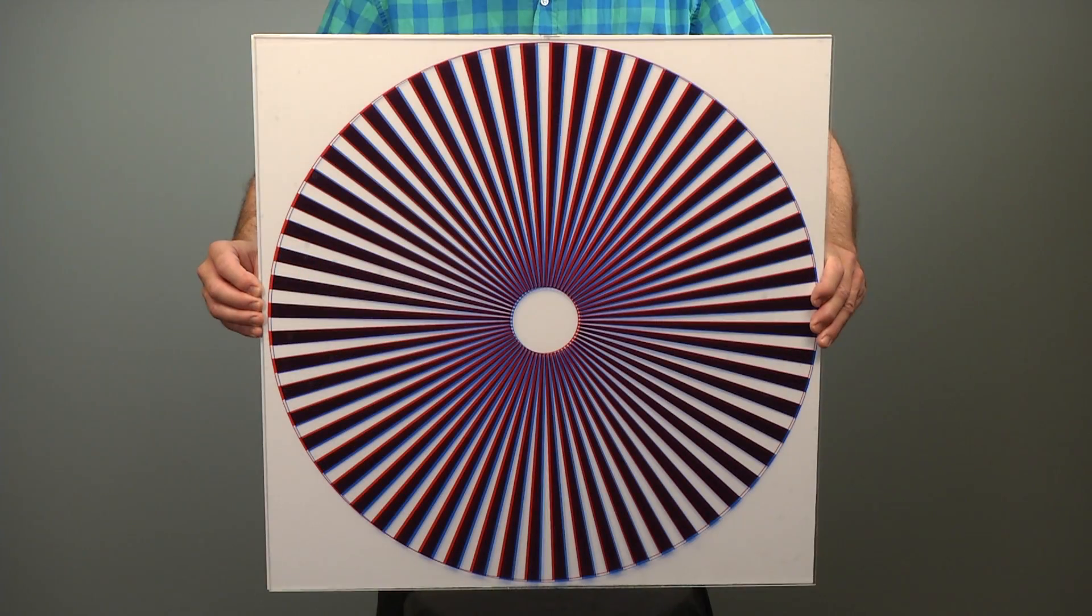But why is reflected sound bad? I'll demonstrate using these two identical patterns. The blue pattern represents direct sound waves, and the red pattern represents reflected sound waves. They start out together,